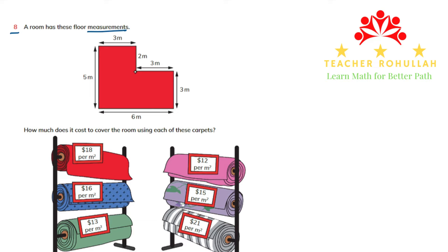So if I cut from here we will have two shapes. The shape down here is having the dimension of six meters long and three meters wide, and the upper one is having the length of three meters and the width of two meters. Now we have to find the area of this one and this one separately and then add them to find the area of the whole shape.